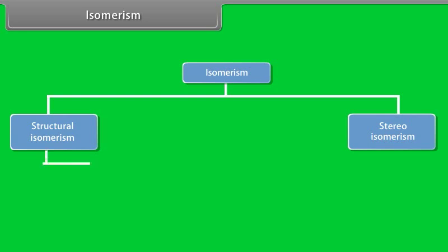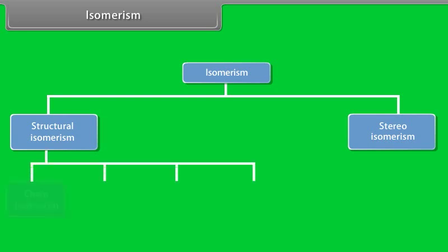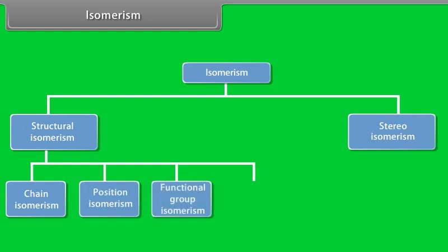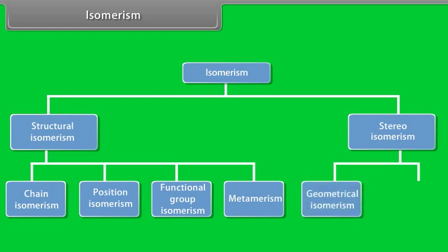Structural isomerism can be subdivided into chain isomerism, position isomerism, functional isomerism, and metamerism. Stereoisomerism is further categorized into geometrical and optical isomerism.